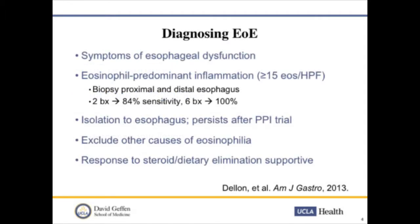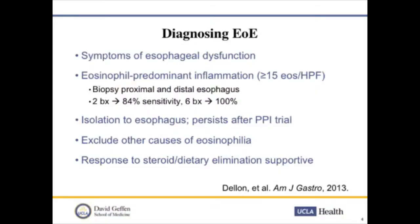EOE really is a manifestation of esophageal dysfunction. Symptoms such as dysphagia to solid foods, food impaction, and even heartburn are all related to motility disturbances, and you can also have resulting physical obstruction. Diagnosis is made with esophageal biopsies. You want to take biopsies from both the proximal and distal esophagus, separate the biopsies, and you want to see greater than 15 eosinophils per high-powered field. The more biopsies you take, the greater the chances of picking up this disorder.